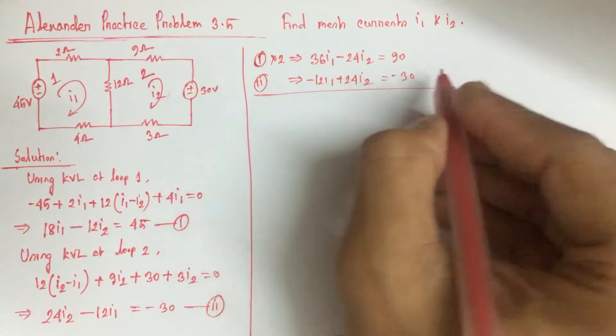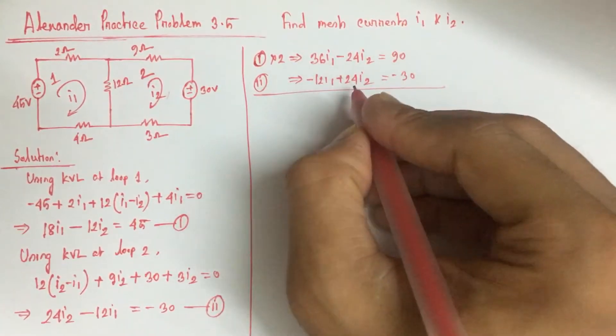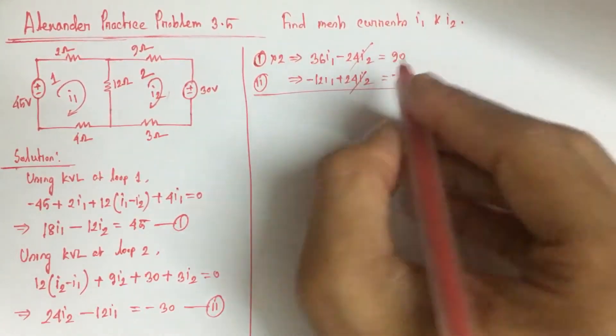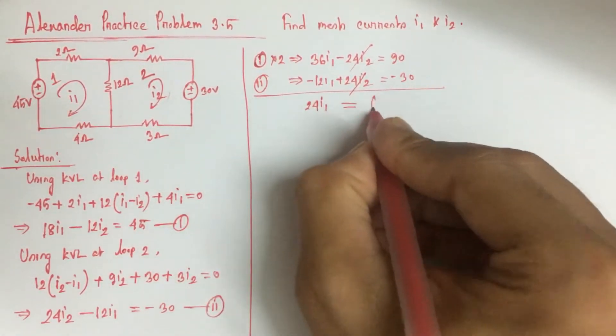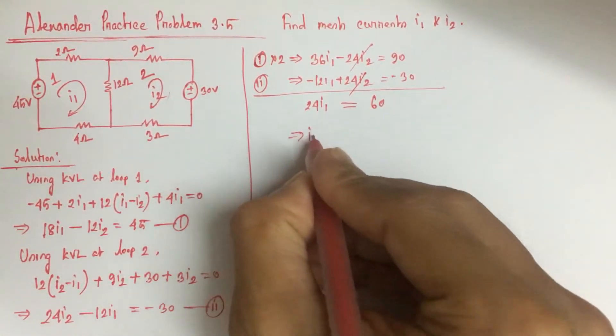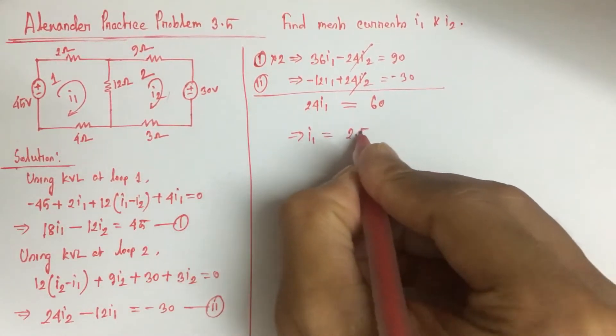We solve the equations. Adding these equations, 24I2 will cancel each other. So 24I1 equals 60. Therefore I1 is 2.5 ampere.